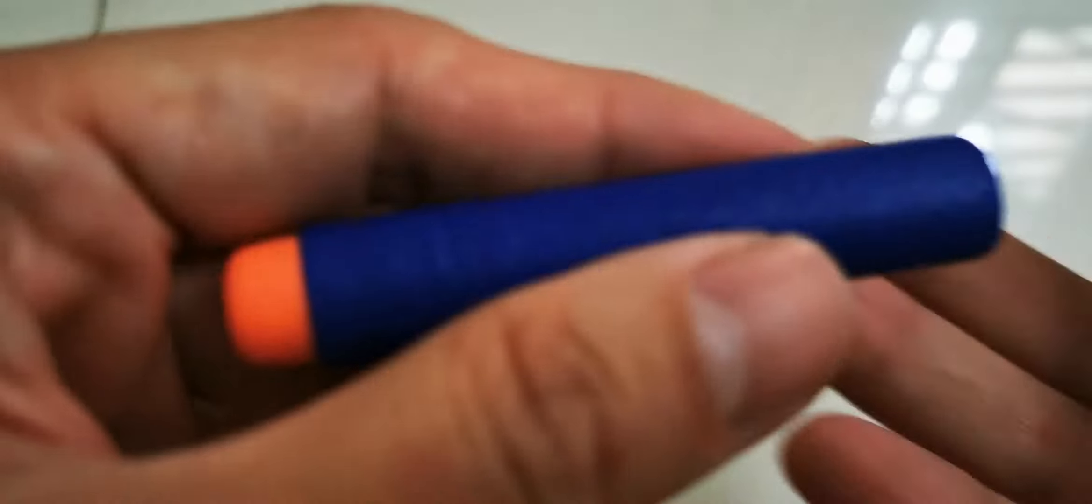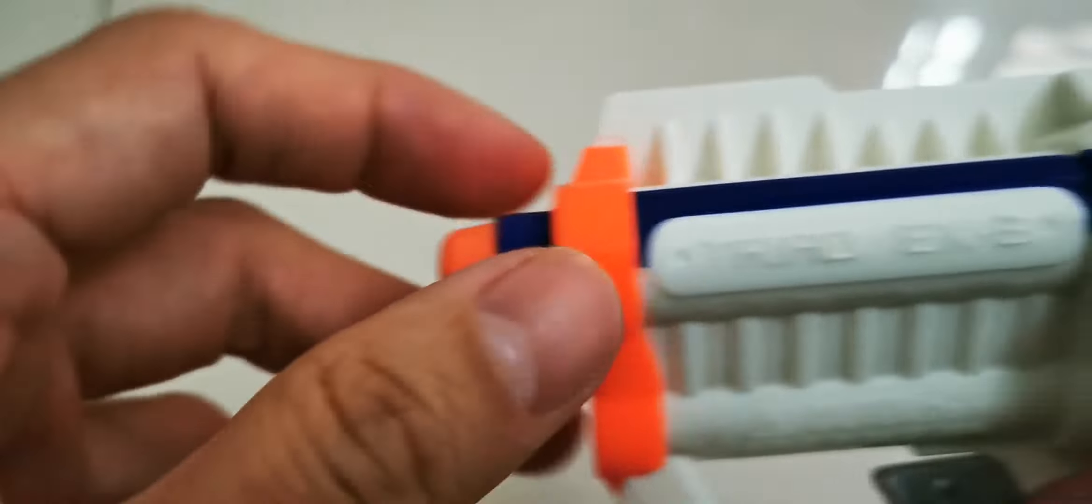Sometimes after you use your bullet for quite some time, when you insert your bullet and pull the trigger, it gets loose and just comes out because at the back here it's already deformed and unable to have proper grip.